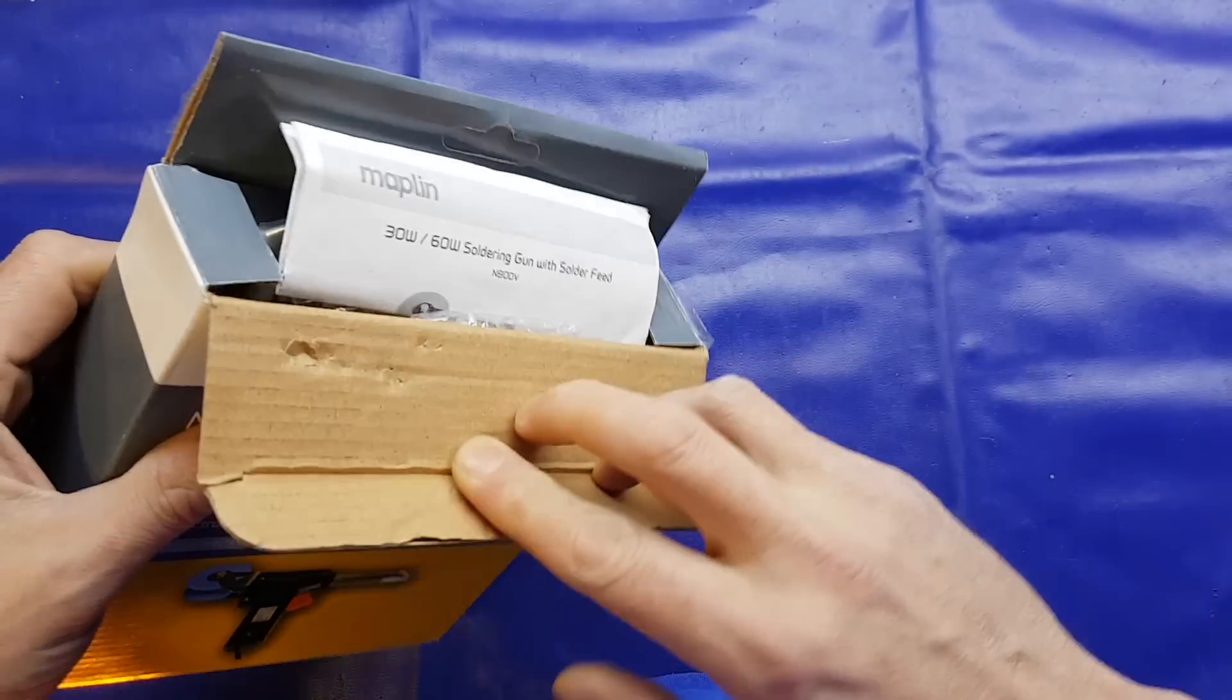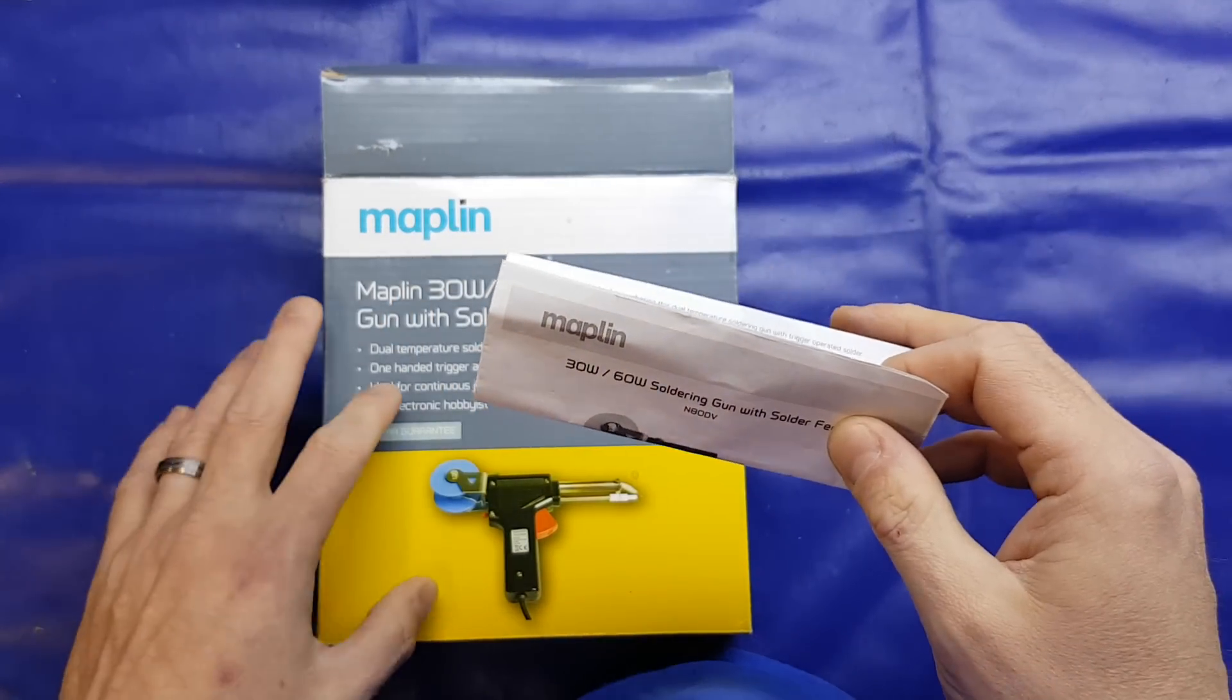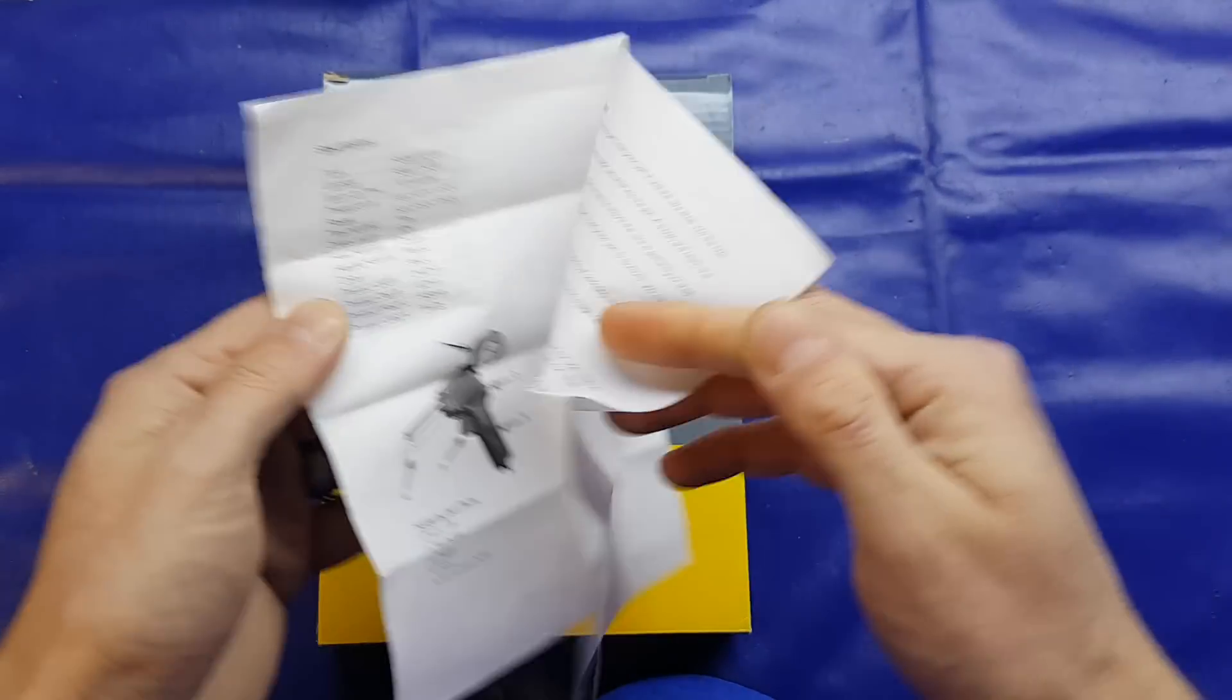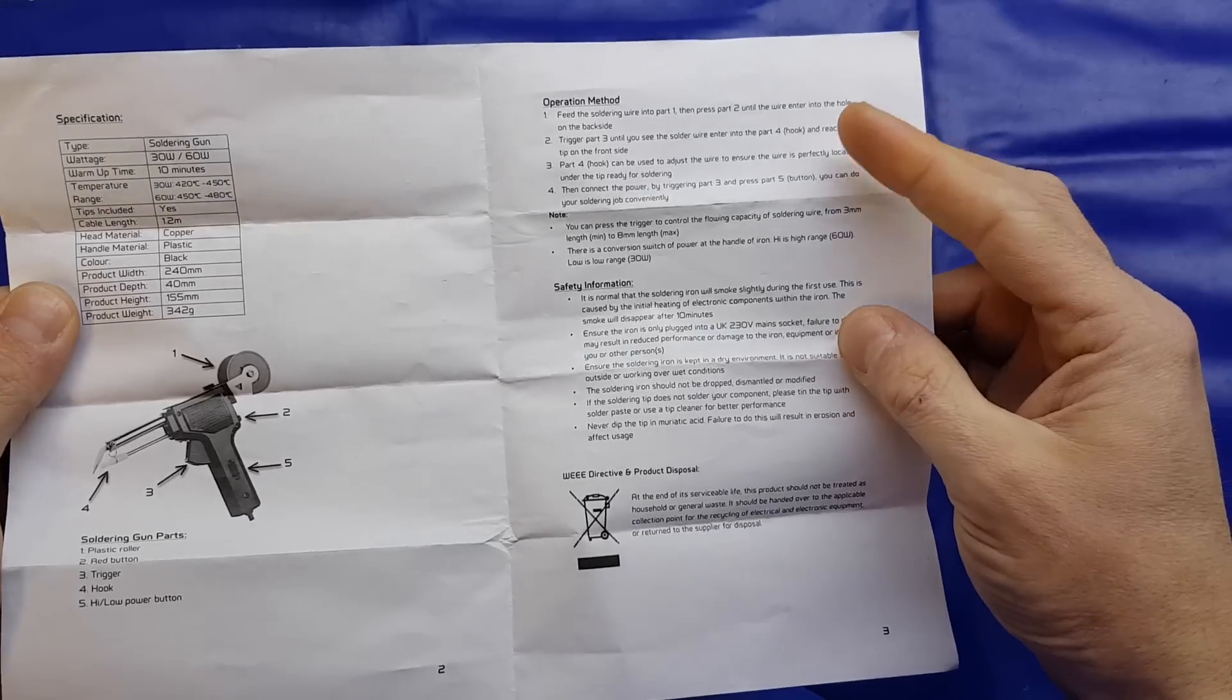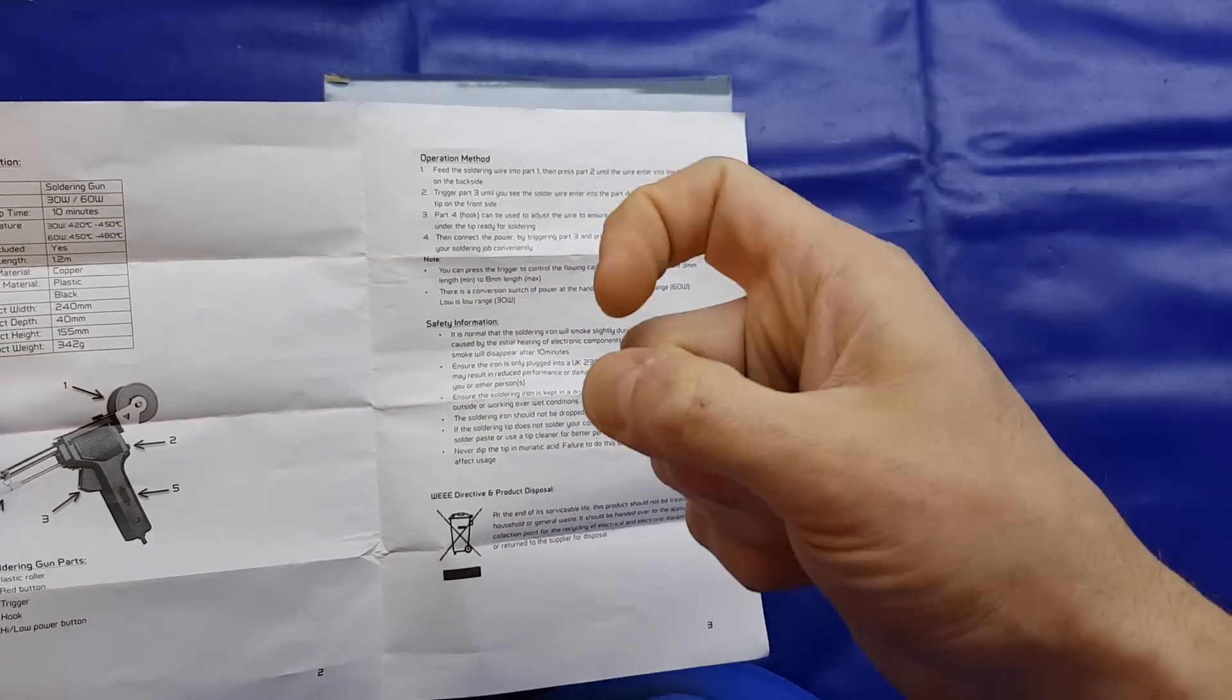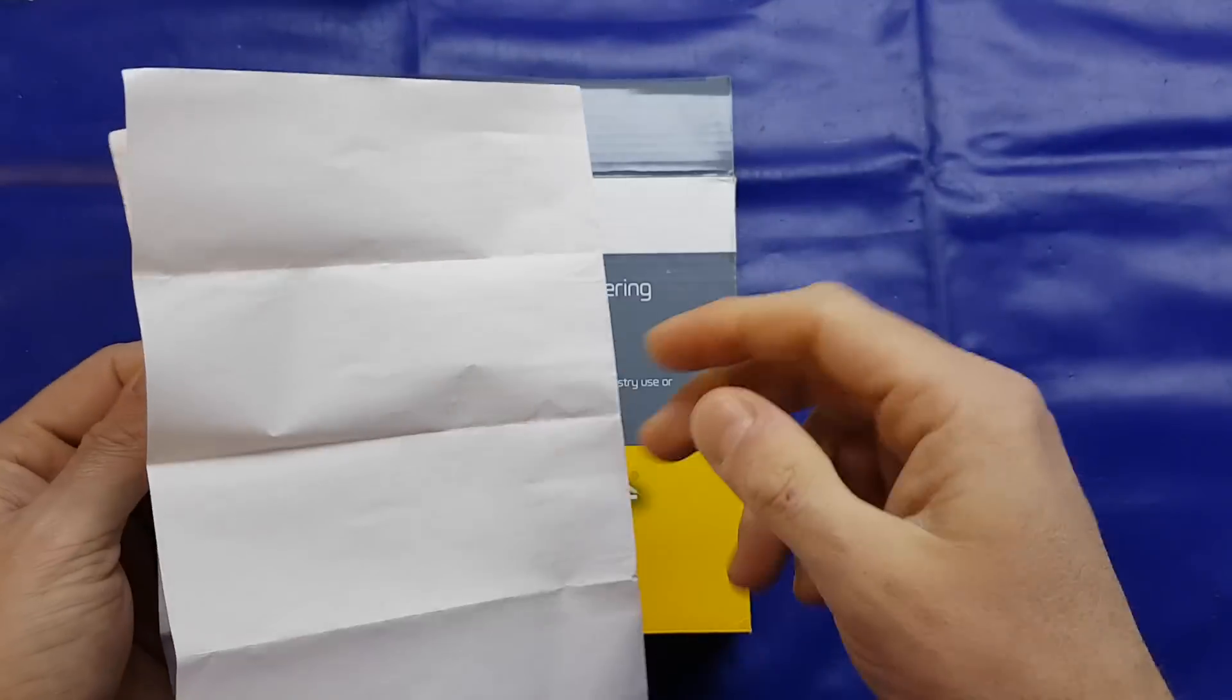Now, as I said, this is discontinued from Maplin. However, it does seem to be a generic Chinese unit, so you can get it at other places online. I think the cheapest I saw it was about £12.99. There's certainly sellers on eBay selling an equivalent version for that price. So we get our instructions. There's nothing really interesting, I don't think.